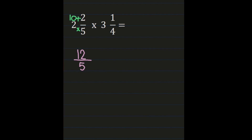Then we do the same for 3 and 1/4: 4 times 3 is 12, and 12 plus 1 is 13. So 13 becomes our new numerator and the denominator of 4 remains the same. Now we have a fraction times a fraction, ready to multiply numerator times numerator and denominator times denominator.